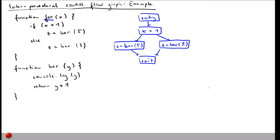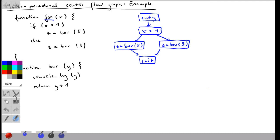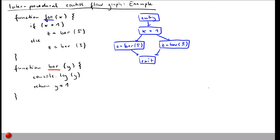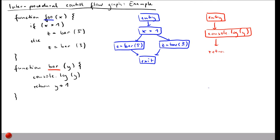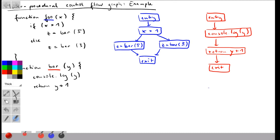Now let's draw the intra-procedural control flow graph for bar, in red. Again we have an entry node. In this case the control flow is a straight sequence of statements: one node for the console.log call, then another node for the return statement, and then we always go to the exit node.